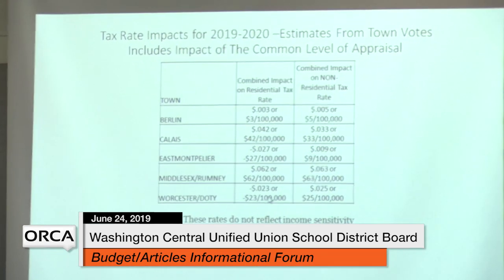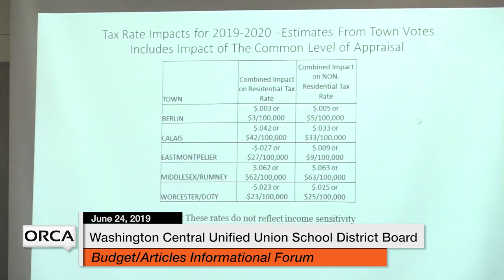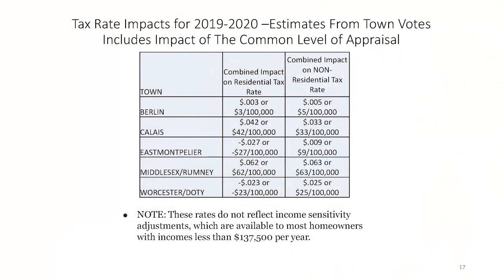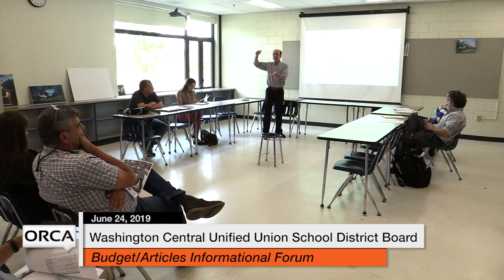This one is from Town Meeting — you should use this as a baseline to understand with a comparison. The combined impact on the residential tax rate from the budget that you voted on in April — the Doty budget — is minus 2.3 cents. The merge impact is plus 0.55. So the difference would be plus 0.078, which is roughly what would be predicted.